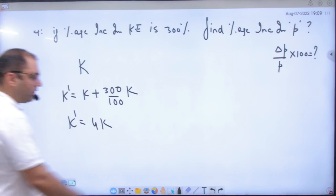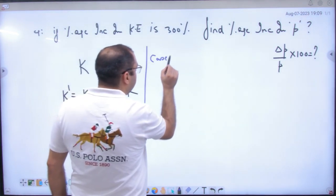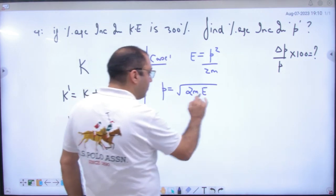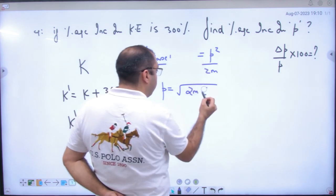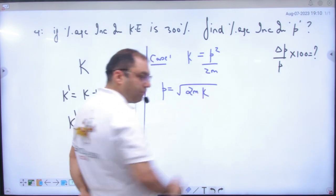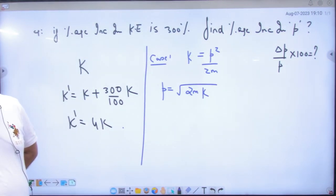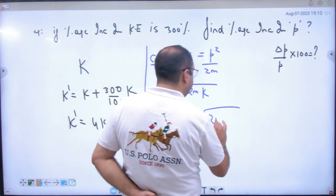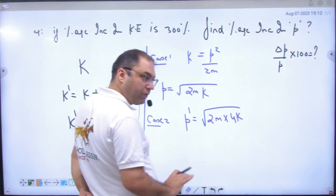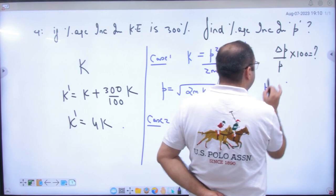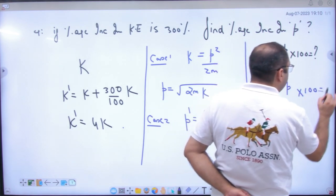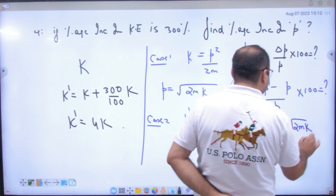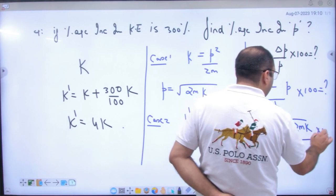So now tell me that in this question case number one, see the energy that is p square by 2m. What is momentum? Under root of 2m into K. So this is case number one. In case number one, case number two, case number two, momentum p dash and 2m into K, 4K. So what will I do? Delta p, p dash minus p, 2m into K by p into 100. To please here p dash value put, 2m into 4K minus p under root of 2m into K divided by p under root of 2m into K into 100. Percentage will come answer.